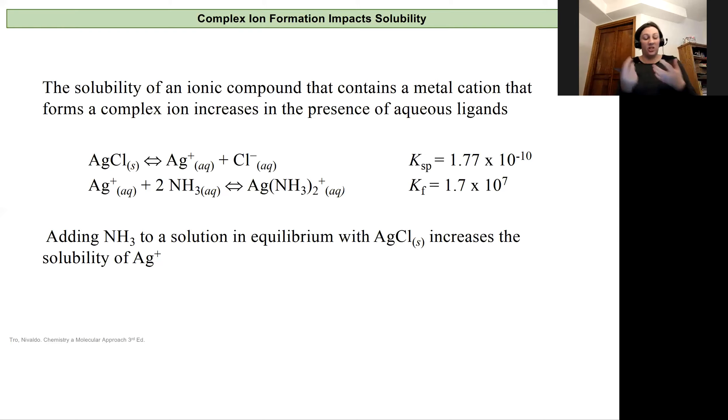So thinking about this in terms of Le Chatelier's principle, if we have silver chloride, which we know is really insoluble, it has a solubility product on the order of 10 to the negative 10. And so we have a lot of silver chloride solid around and we'll have very little of our silver and our chloride ions.